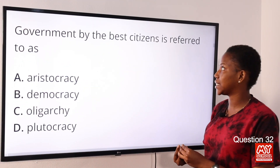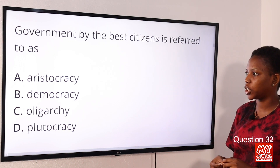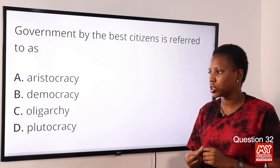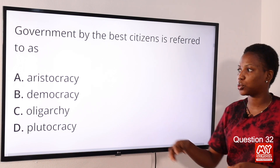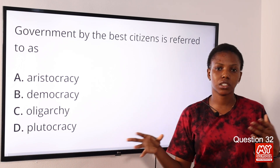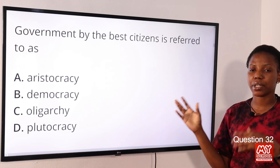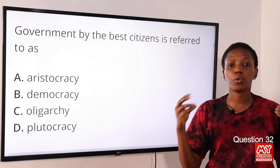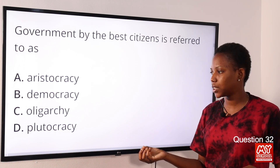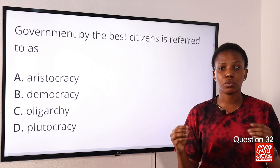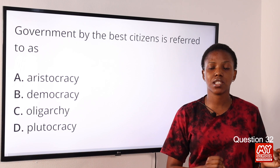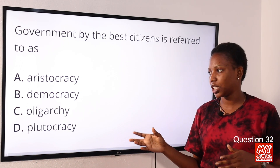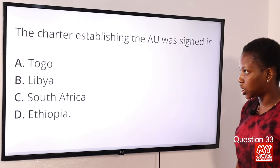Question 32: Government by the best citizen is referred to as — Option A: aristocracy. Option B: democracy. Option C: oligarchy. Option D: plutocracy. The answer is Option A, aristocracy. Aristocracy is government by the best citizen. Democracy is a system where people choose their representatives. Oligarchy is a system where a few people hold power. Plutocracy is government by the wealthy.